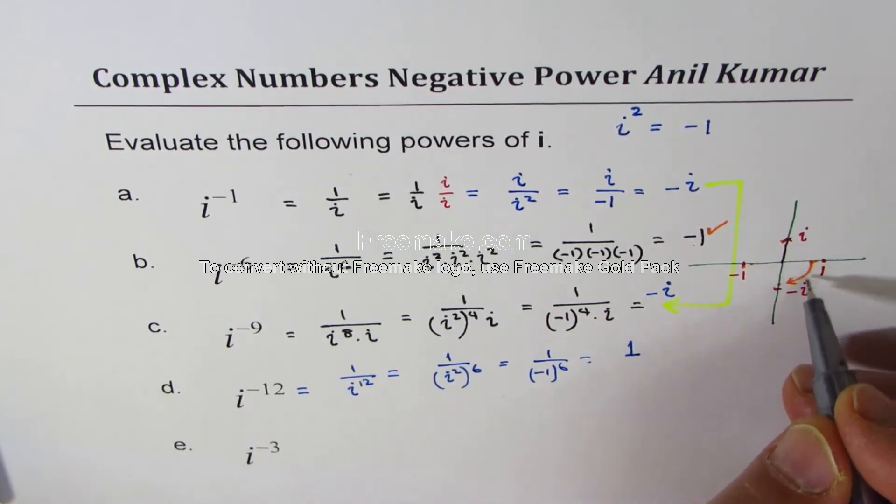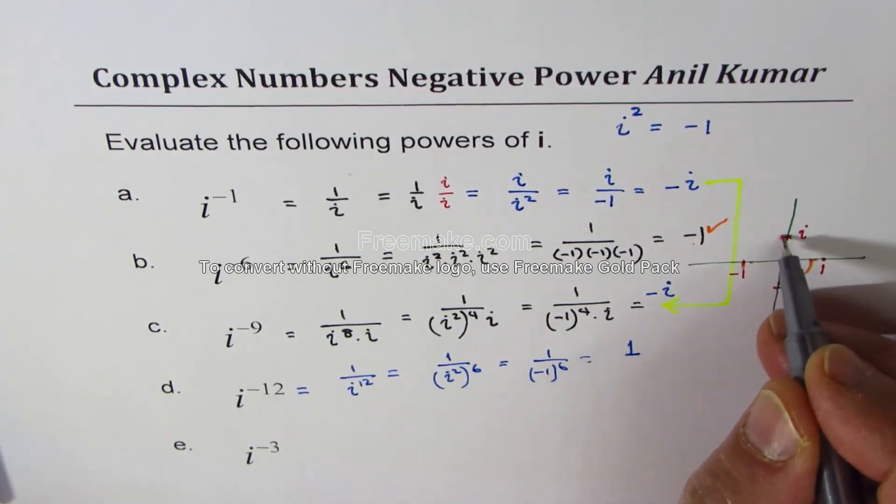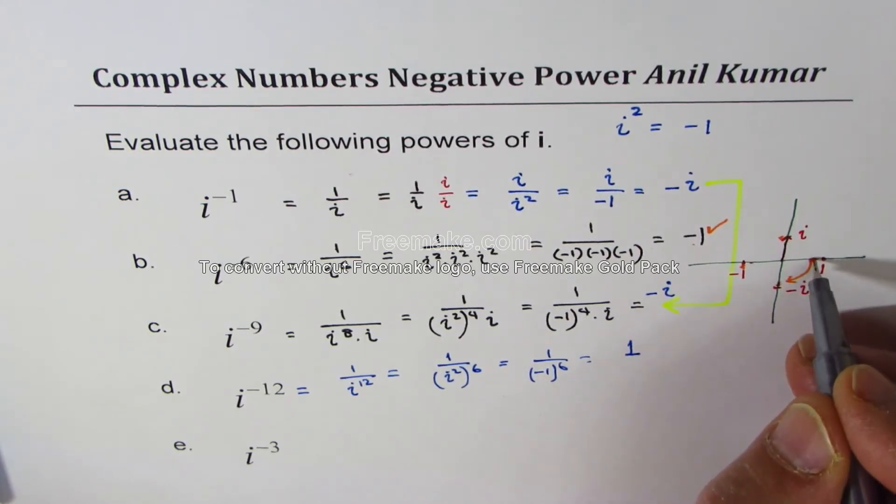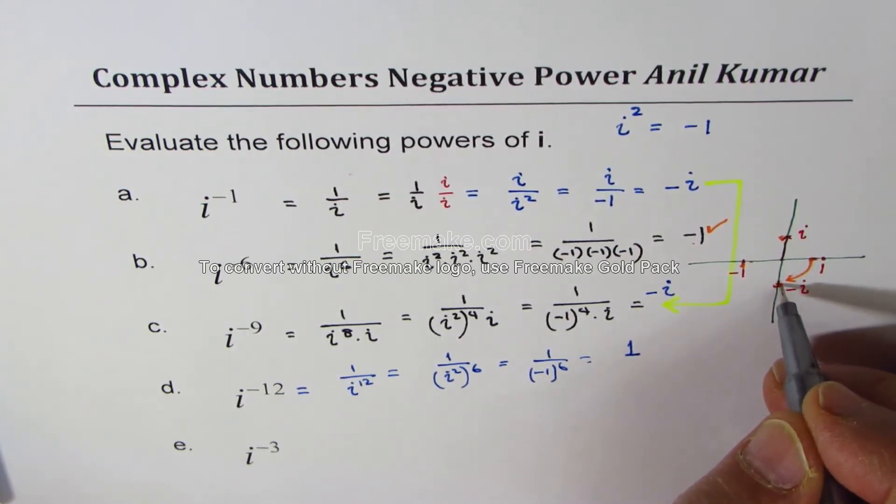Minus 9. So from here, we move clockwise: 1, 2, 3, 4, 5, 6, 7, 8, and 9. So we get the same value, which we got for minus 1.